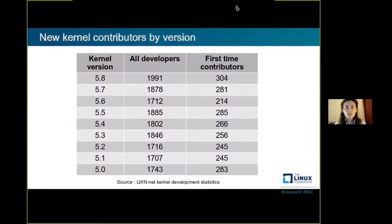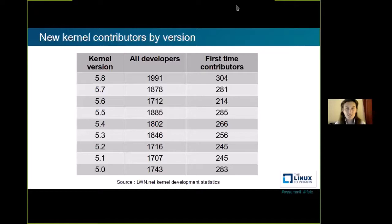We can see that from 1,600 to 1,800 of those people are people who contribute their first kernel patch in that particular kernel version. Imagine 6 kernel developers — for each group of 6, there is one who is doing it for the first time. And it's not just the last kernel; it's been here with us for years. I'm showing only the 5.0 series here, but I do have data for all versions — it's still the same.